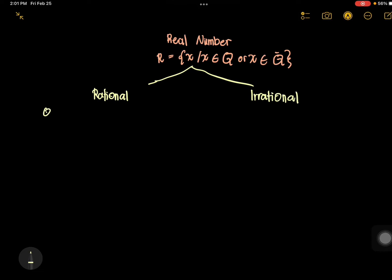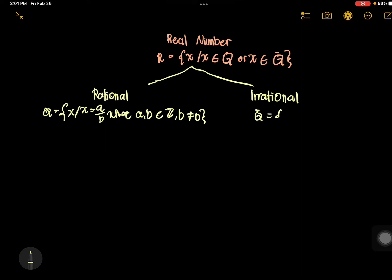Irrational numbers are defined as x such that x equals A over B, where A and B are elements of the integers and B is not equal to 0 — that is rational. While irrational numbers, of course, are those numbers that are not an element of the rational numbers.